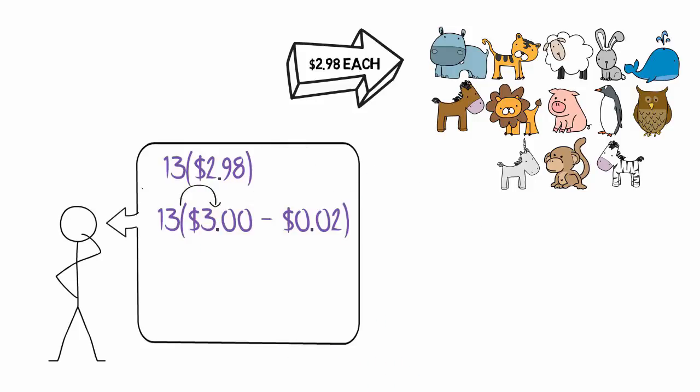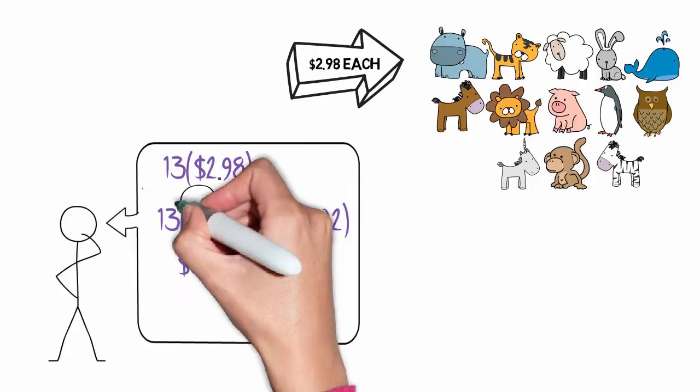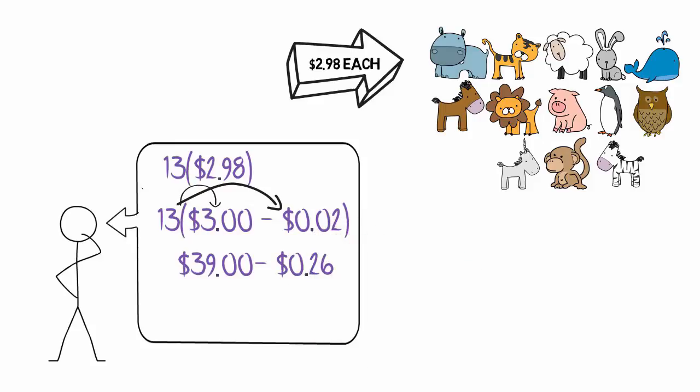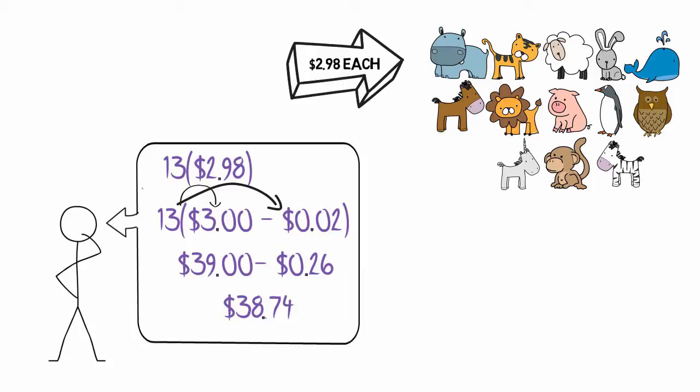Well, thirteen times three is fairly easy—that's thirty-nine dollars. Thirteen times two cents is twenty-six cents. So my answer is thirty-nine dollars minus twenty-six cents, or thirty-eight dollars and seventy-four cents.